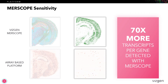However, on the array-based platform example, you barely see any spots there, and you would probably incorrectly conclude that there is not much present in terms of cells expressing this gene. In fact, when we looked at the total amount of transcripts expressed for the entire gene panel, we found that there were 70 times more transcripts per gene detected by MERScope than the array-based platform.